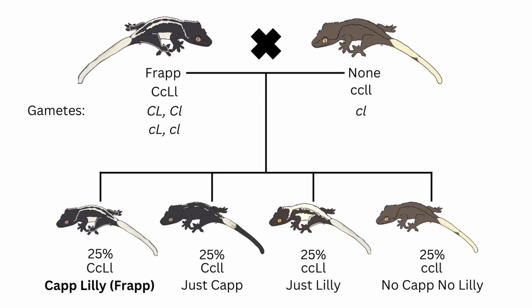When you pair a frappuccino to a crested gecko that has none of the genes, this is another ethical pairing because there are no chances of making a super cap or a super lily. Therefore, none of the kits will have the health issues that a super cap or a super lily have.